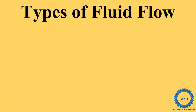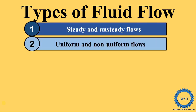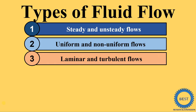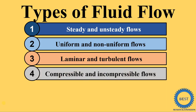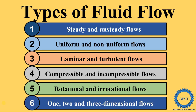The first classification is steady flow and unsteady flow. Second is uniform and non-uniform flow. Third is laminar and turbulent flow. Fourth is compressible and incompressible flow. Fifth is rotational and irrotational flow. And the last one is one-dimensional, two-dimensional, and three-dimensional flow.